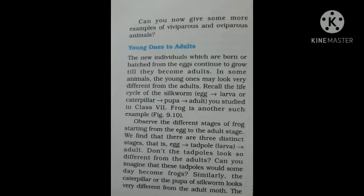So the adult silkworm's structure looks just like a butterfly, which is very different from the earlier stages like larva and pupa. These are the drastic changes from the initial stages. We have also seen this in the frog — let us observe the different stages of the frog starting from the egg to the adult stage.